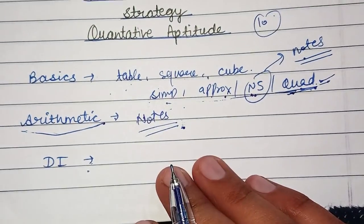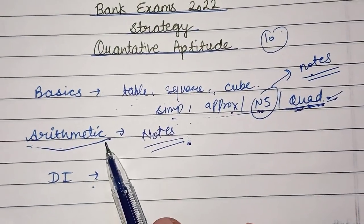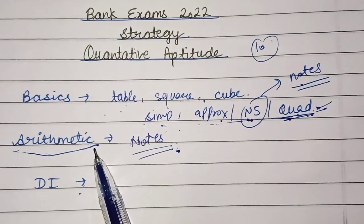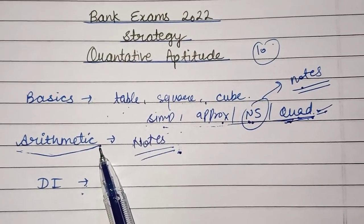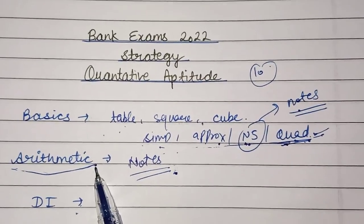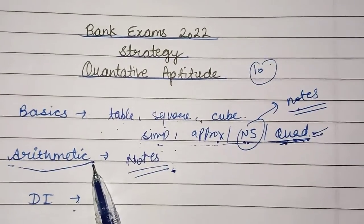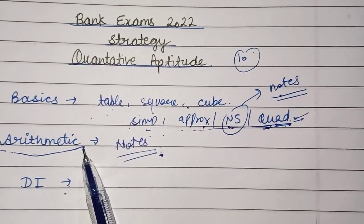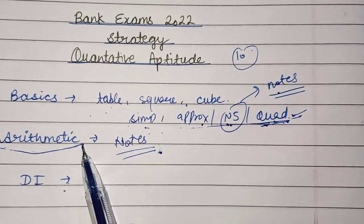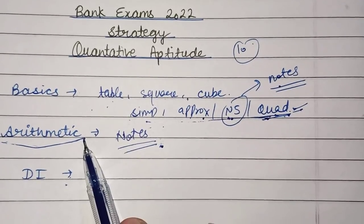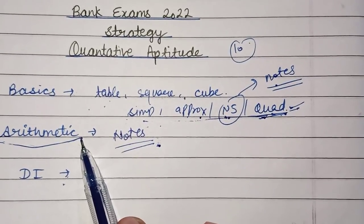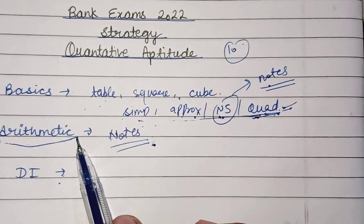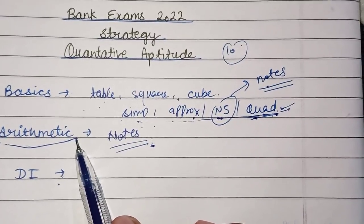After DI, arithmetic will take you around one and a half months if you do it properly. This is a great time because no exam is coming up soon — maybe directly SBI Clerk will come. So targeting that exam, you can very thoroughly clear your arithmetic basics, and in around two months your arithmetic will become very strong if you practice daily and do chapters daily.